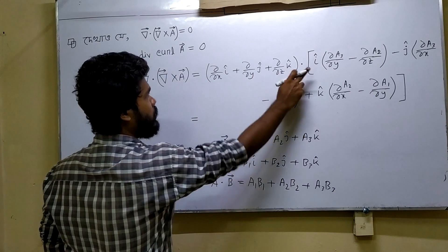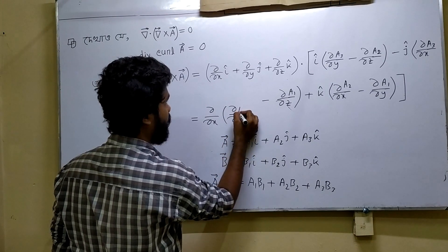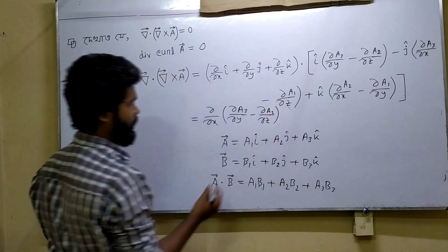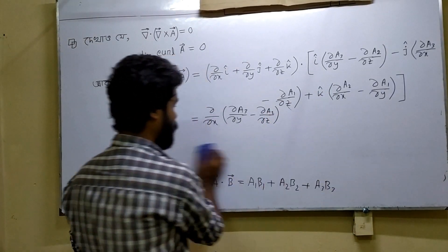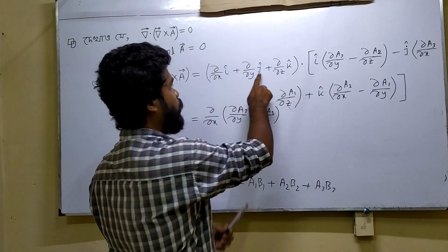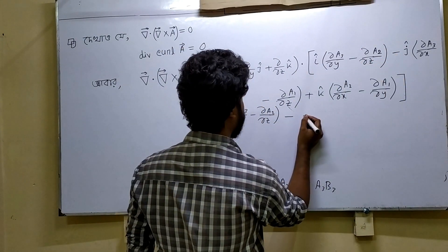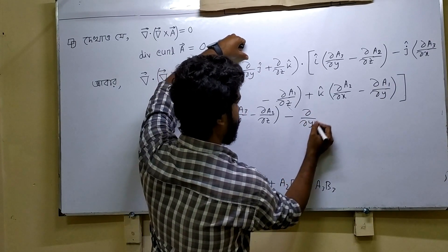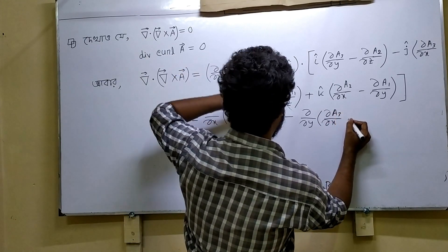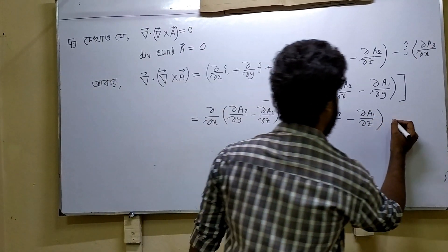We have del y A3 minus del z A2 as one component. We take the same approach for each term. We read the same structure: del del y of A3 minus del del z of A2, and similarly for the next component del del x A3 minus del del z A1.